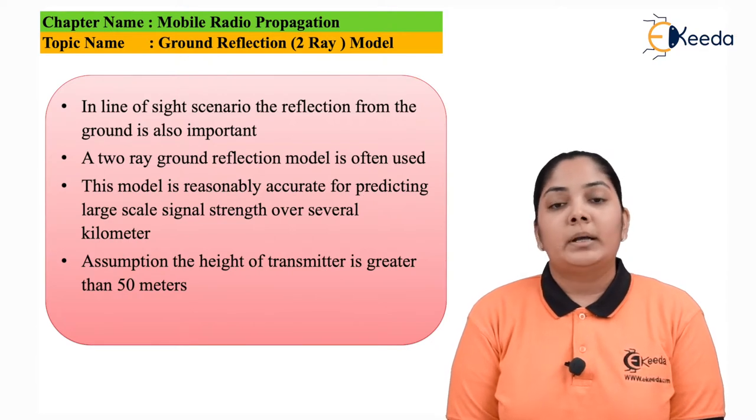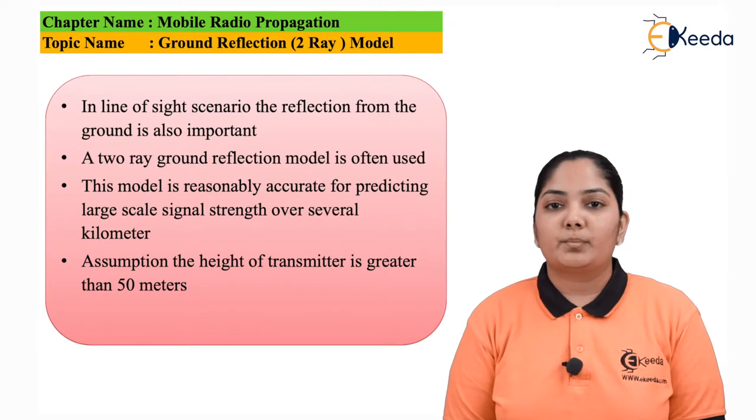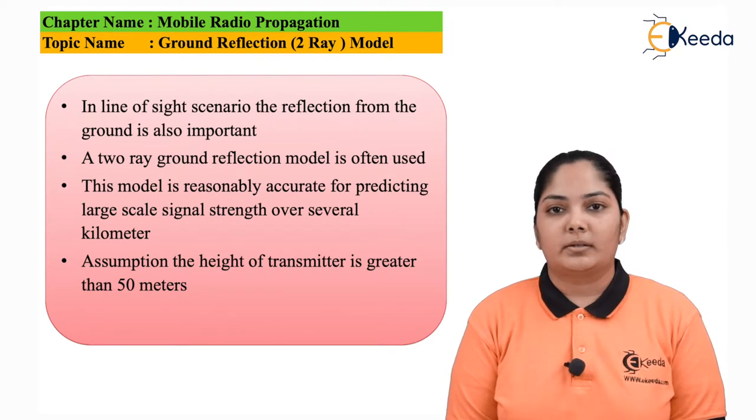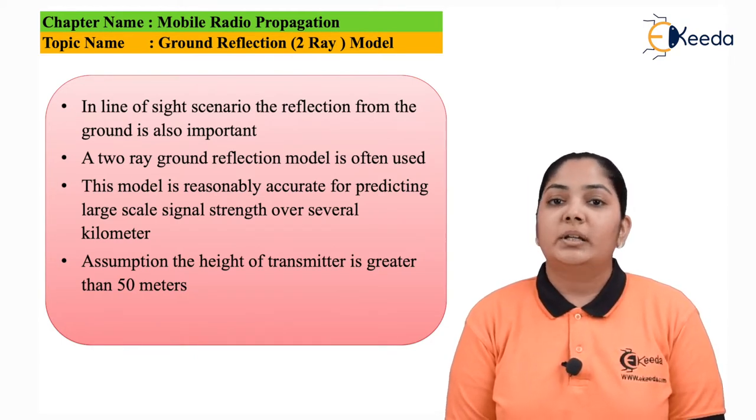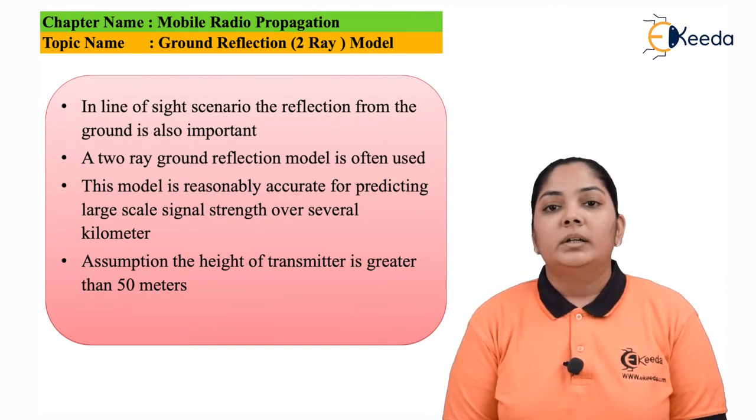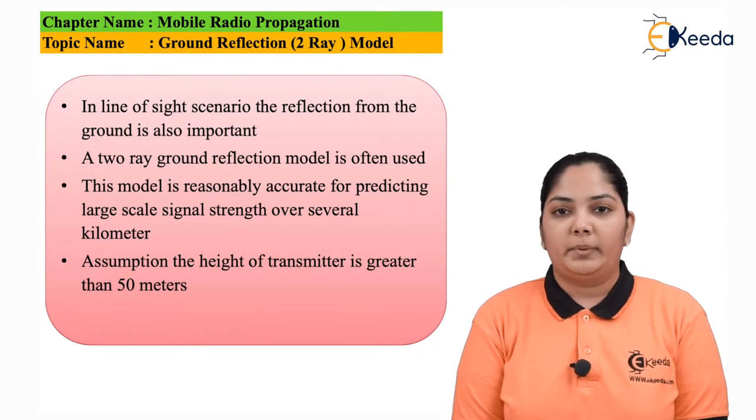Hence, the ground reflection model takes place as an important part in this communication. This reflection model is extremely useful in understanding the large scale signal strength over several kilometers. Because over several kilometers, there are multiple points through which the waveform will get reflected through the ground. Here the assumption is that the transmitter height should be greater than 50 meters.